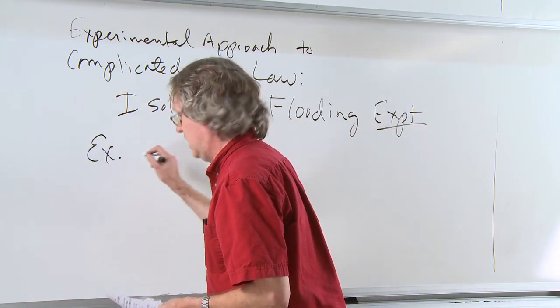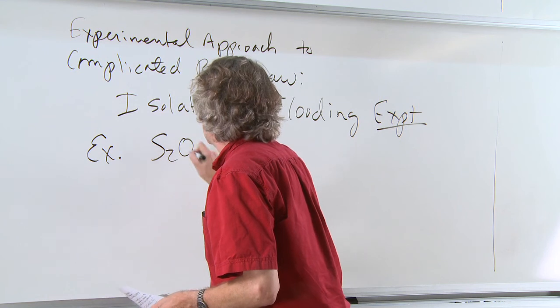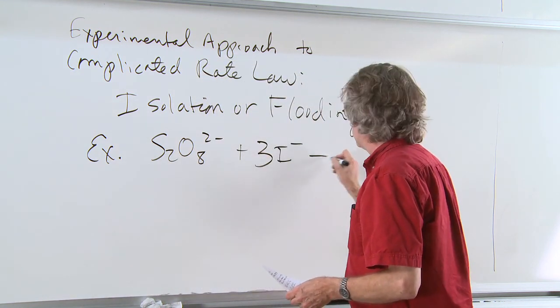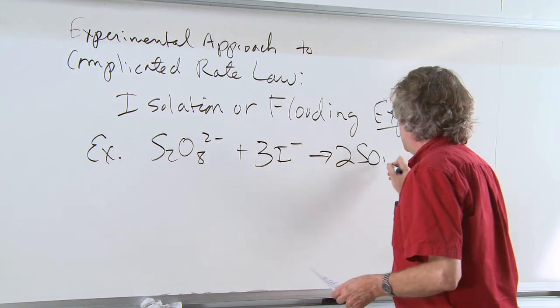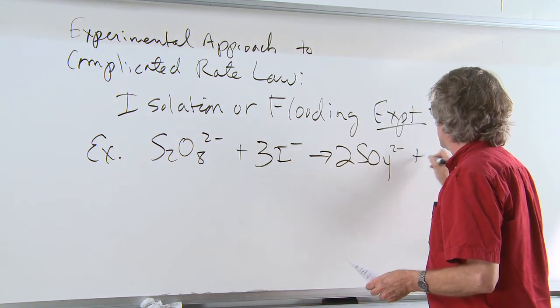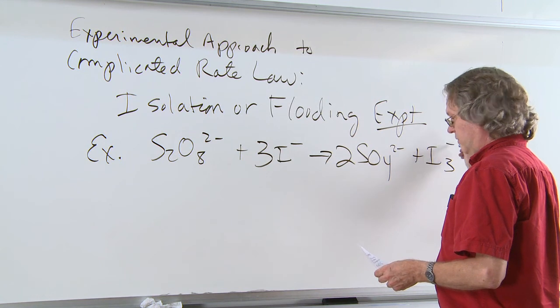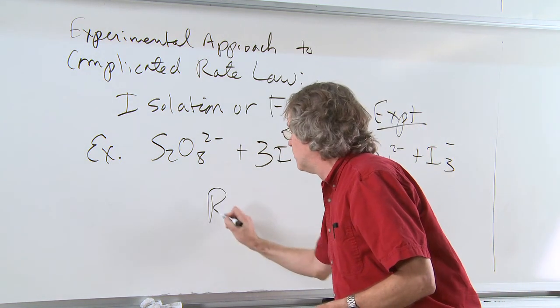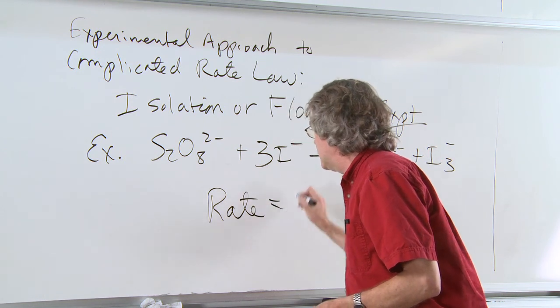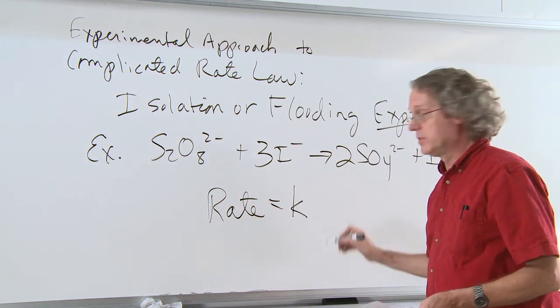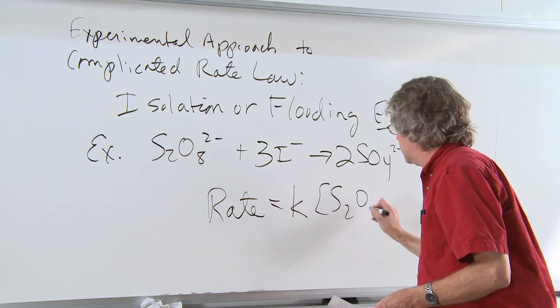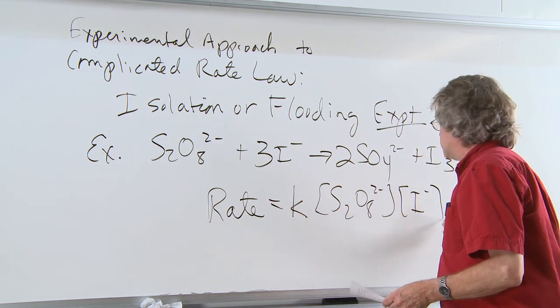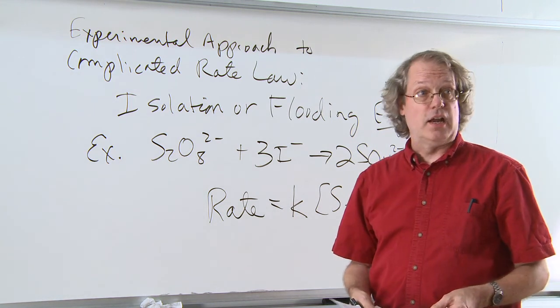We'll see how we can use this analysis to look at a reaction that we talked about previously and see how we can get to the rate law in a somewhat different manner. We saw previously that the rate for this particular reaction could be written in terms of the rate constant times the concentration of peroxydisulfate ions times the concentration of I minus ions.